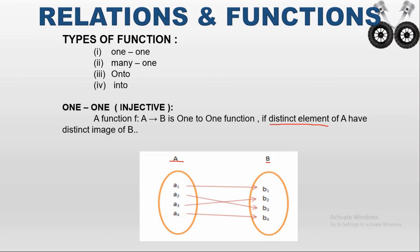So A1 is mapped to B1, written as F(A1) = B1. A2 is mapped to B3, written as F(A2) = B3. A3 is mapped to B2, written as F(A3) = B2. And A4 is mapped to B4, written as F(A4) = B4. The distinct elements in A — A1, A2, A3, A4 — are mapped to distinct elements in B — B1, B3, B2, B4. This is called a one-to-one function.